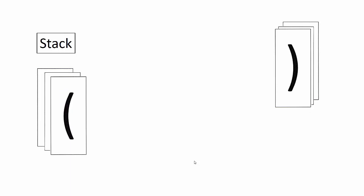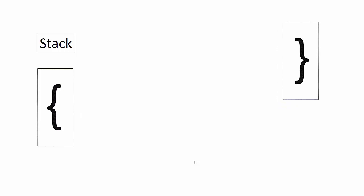Now we see a right parentheses. Is the stack empty? No. The top element is a left parentheses, so we pop it from the stack and discard both items. The next item is a right square bracket, and the stack has a left square bracket — it corresponds, so we discard both. Then we see a right curly brace and on the stack is a left curly brace, which corresponds. We discard both, reach the end of our expression, and therefore it's balanced.